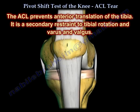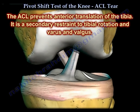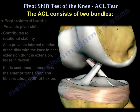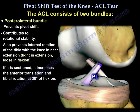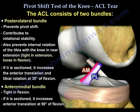The ACL prevents anterior translation of the tibia and is a secondary restraint to tibial rotation and varus and valgus. The ACL consists of two bundles. The posterolateral bundle prevents the pivot shift, contributes to rotational stability, and prevents internal rotation of the tibia with the knee in near extension — tight in extension and loose in flexion. If it is sectioned, it increases anterior translation and tibial rotation at 30 degrees of flexion. The anteromedial bundle is tight in flexion; if sectioned, it increases anterior translation at 90 degrees of flexion.